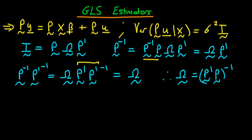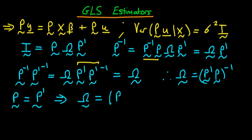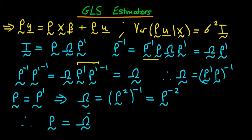We have omega in terms of P, but we want P in terms of omega. We get this by assuming our transformation matrix P is symmetric, meaning P equals P transposed. Under this assumption, omega equals P times P — that is, P squared — all to the power minus one, which is just P to the power minus two. We can then easily solve for P: P equals omega to the power minus one half.